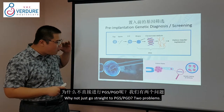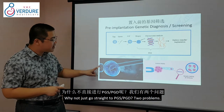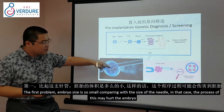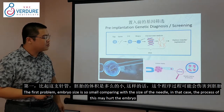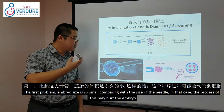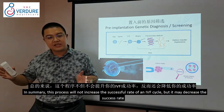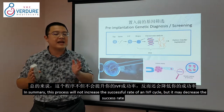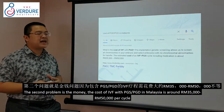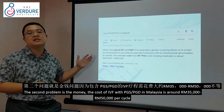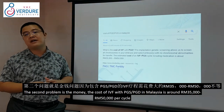Why not just have everyone do embryo genetic selection? Two problems: first, there is a chance the embryo can be damaged by the biopsy needle process, potentially decreasing IVF success rates. Second, the PGS/PGD process can increase costs by $35,000 to $50,000 on top of existing IVF costs — one client spent around $85,000 in a single IVF cycle.